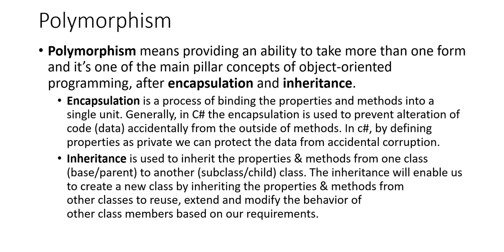So polymorphism — it's the ability for an object to take more than one form, and it's one of the main pillars of object-oriented programming, along with encapsulation and inheritance. Encapsulation, mentioned very early on in this video series, is the idea of binding properties and methods together in a single unit.